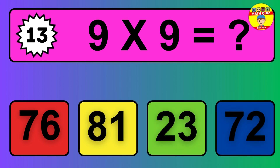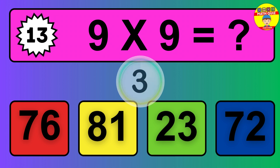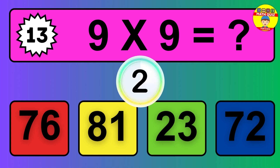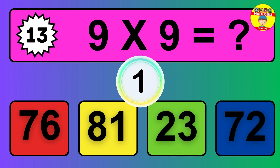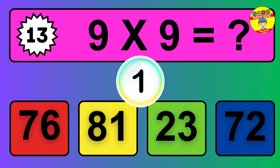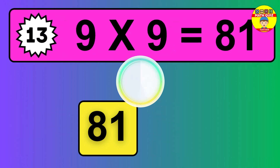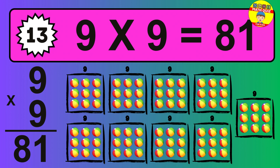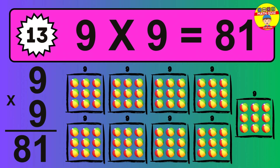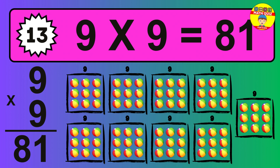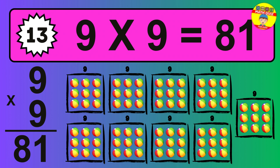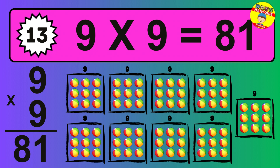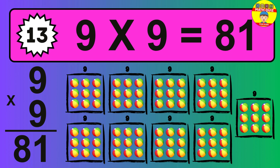Question 13. Nine times nine equals what? The answer is nine times nine is eighty-one. To calculate, we have nine groups with nine balls each one. So how many balls do we have? Eighty-one balls.